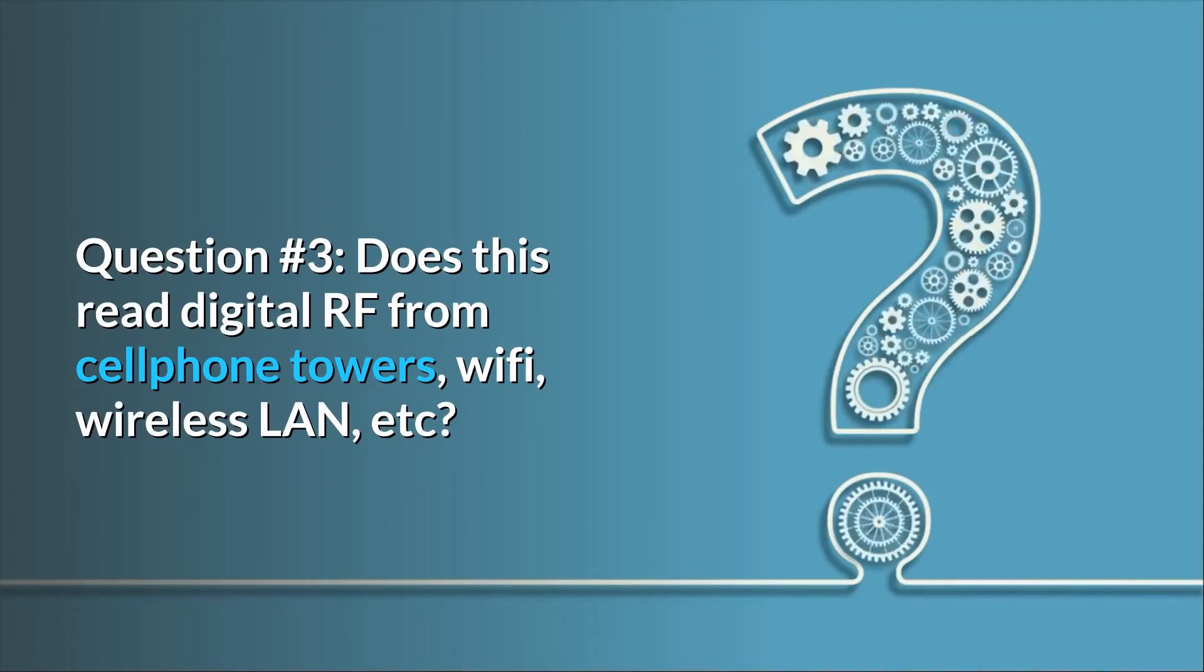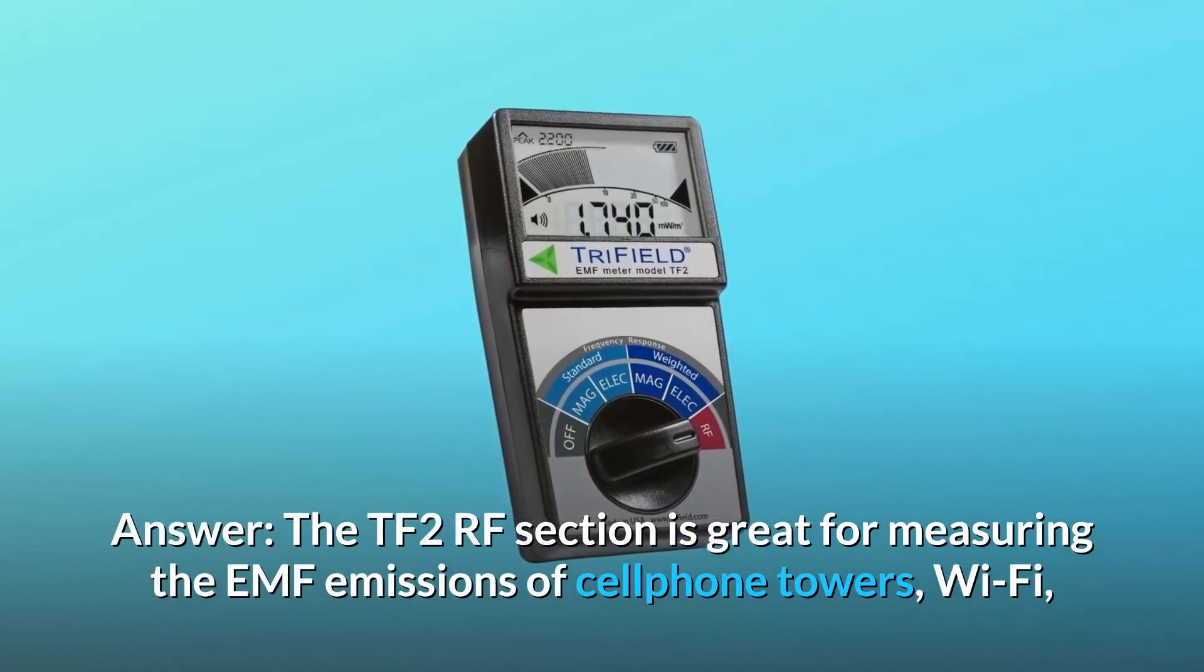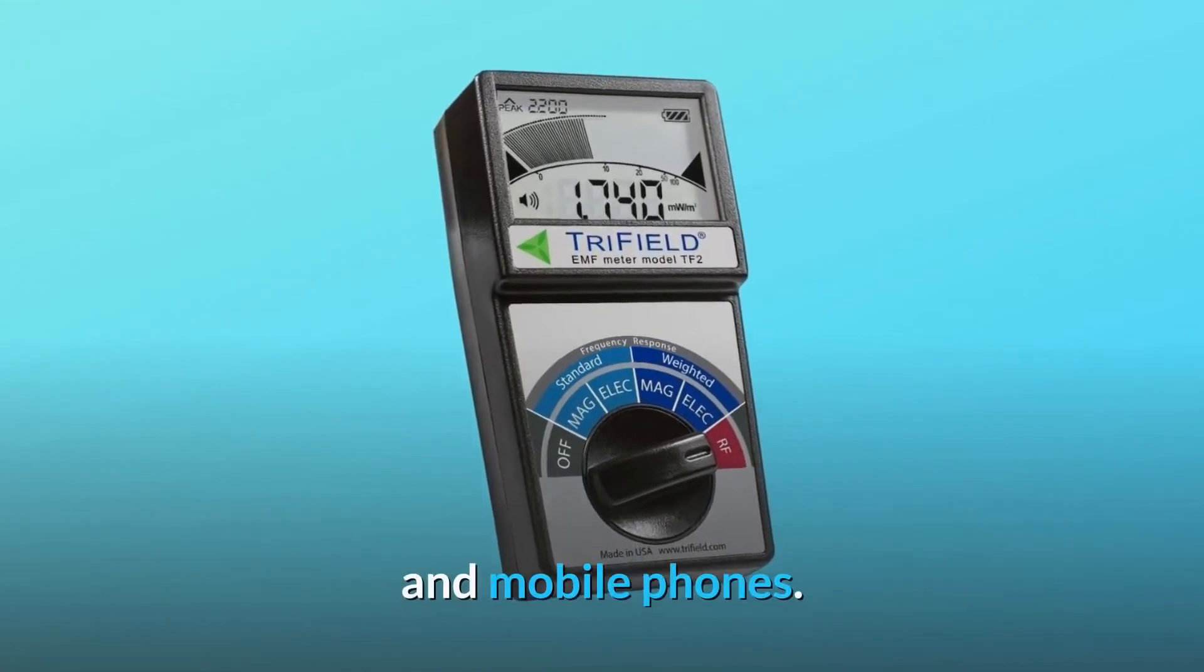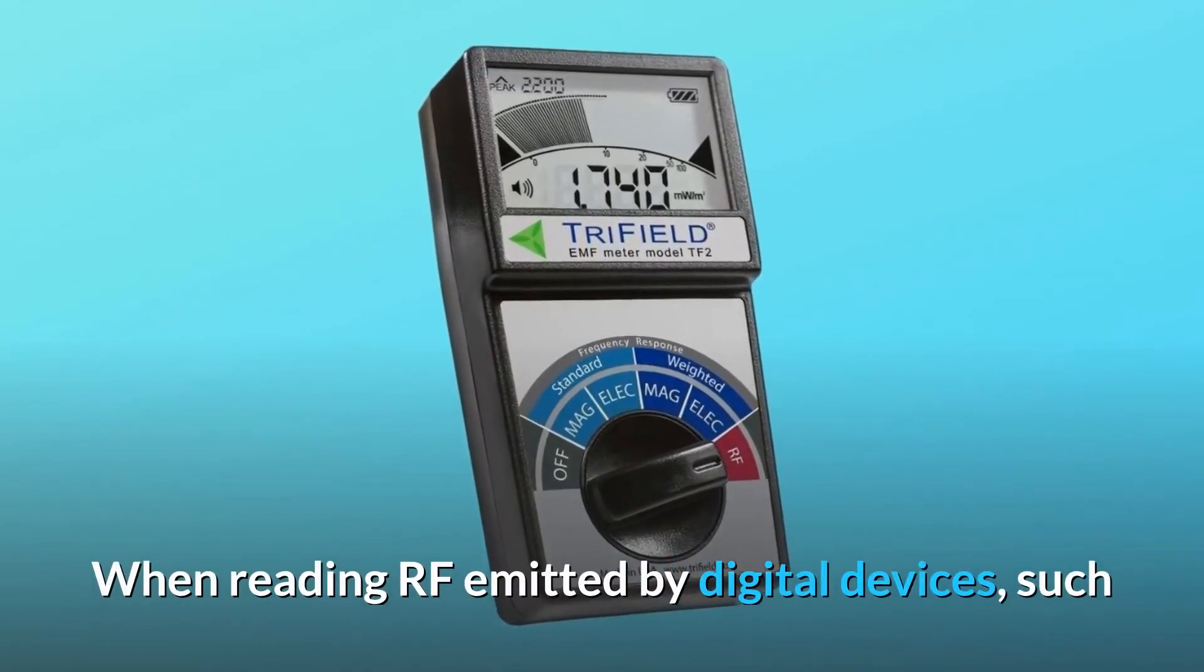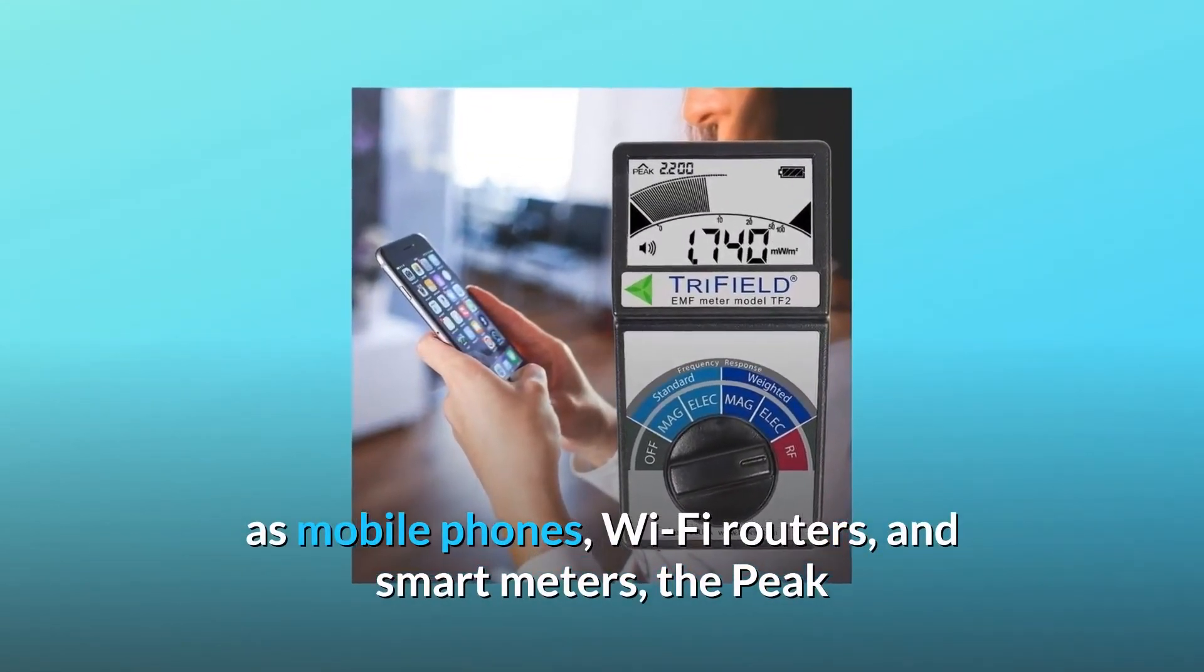Question number 3: Does this read digital RF from cell phone towers, Wi-Fi, wireless LAN, etc.? Answer: The TF2 RF section is great for measuring the EMF emissions of cell phone towers, Wi-Fi, and mobile phones. When reading RF emitted by digital devices such as mobile phones, Wi-Fi routers, and smart meters, the peak...